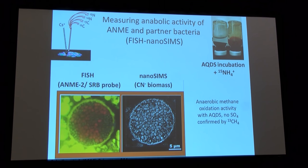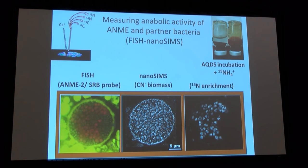We wanted to see whether the archaea and sulfate-reducing bacteria were active under these conditions, so we added 15N label and looked at evidence of activity between the partners. Looking in nanoSIMS space at the 15N/14N ratio, we see that only the archaea are active — the cells shown in red — while the sulfate-reducing bacteria were shut off. We're seeing evidence of methane oxidation while the bacterial partner is inactive, which was very exciting. This suggested we could separate the partnership and start asking questions about what makes the sulfate-reducing partner versus the archaea tick under different conditions — and possibly even get these methane-oxidizing archaea in pure culture.